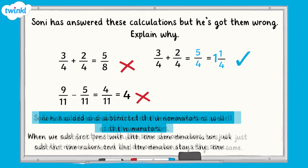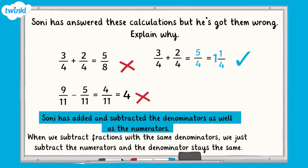For nine-elevenths take away five-elevenths, he only needed to subtract the numerators — nine take away five — which equals four. The denominator, eleven, needed to remain the same. So nine-elevenths subtract five-elevenths equals four-elevenths.